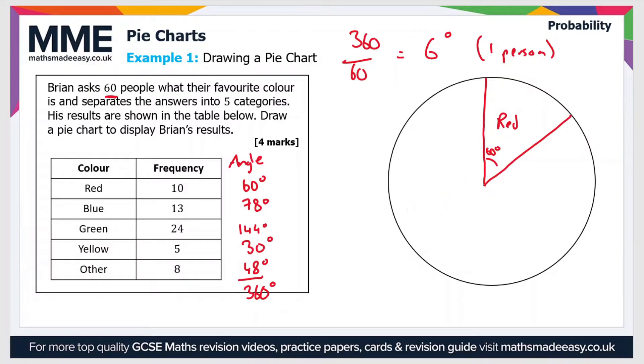And then the next one, the blue category, that should have an angle of 78 degrees. So slightly larger than that. So 78 degrees there. So that's blue.